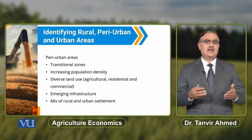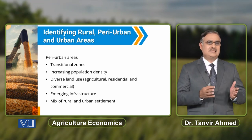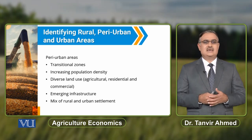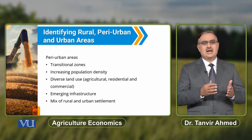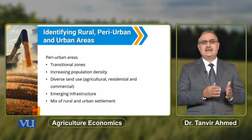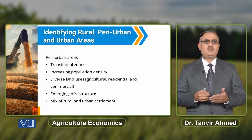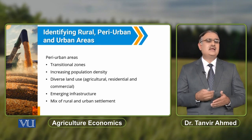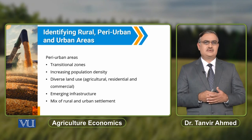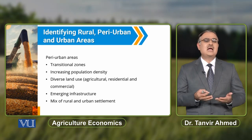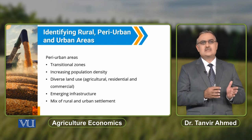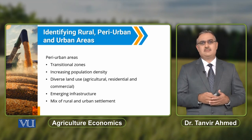But when we define peri-urban areas, these are basically transitional zones that lie between urban and rural areas. With the passage of time, there is increasing population density, diverse land use, and a mix of rural and urban settlements including agriculture.